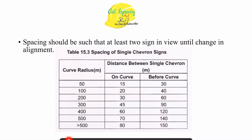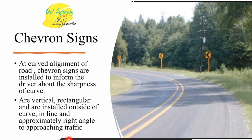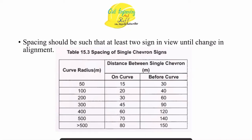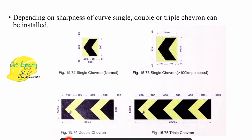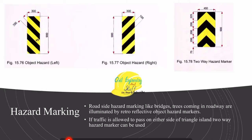Depending on the curve radius, the spacing between chevron signs is determined. Chevron signs are placed on the curve, and the spacing between them is based on the curve radius. Depending on the sharpness of the curve, we can use single, double, or triple chevron symbols — single, double, and triple chevron — just to indicate that this is a sharp curve.